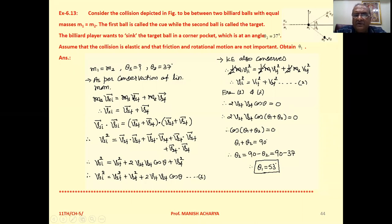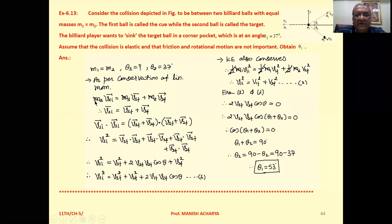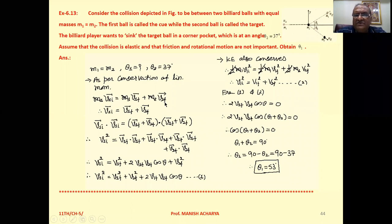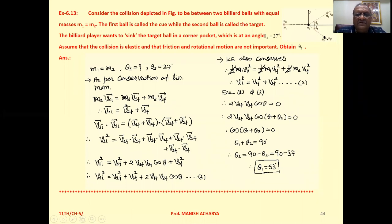As per the conservation of linear momentum, initial total linear momentum equals final total linear momentum. The initial momentum is just that of the first ball since the second one is stationary: M1 V1i. After collision the velocities are V1f and V2f, so M1 V1f plus M2 V2f. Since M1 equals M2, we can cancel the mass from both sides, giving us vector V1i equals vector V1f plus vector V2f.